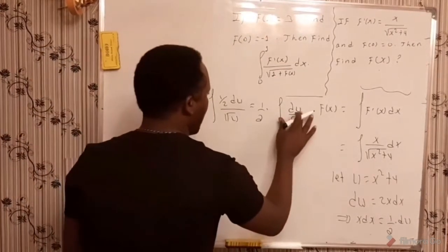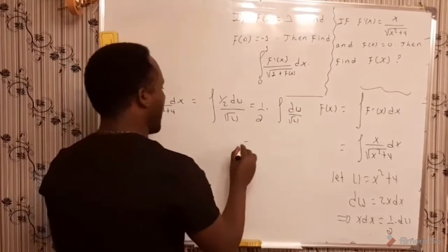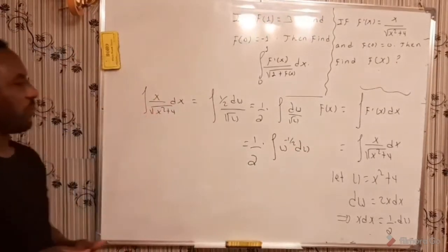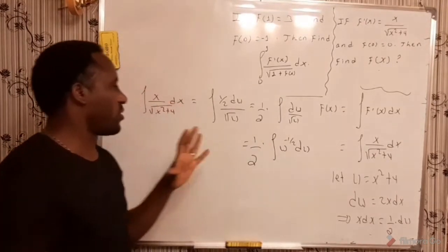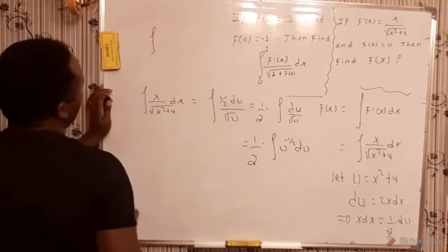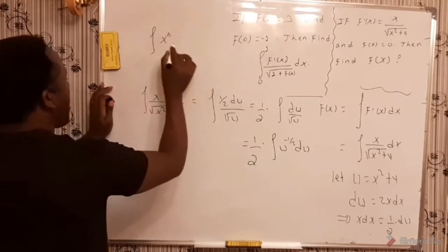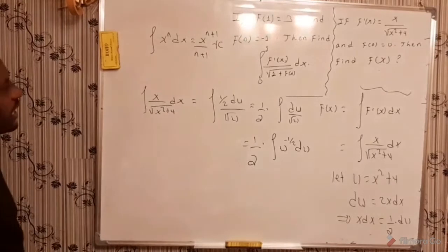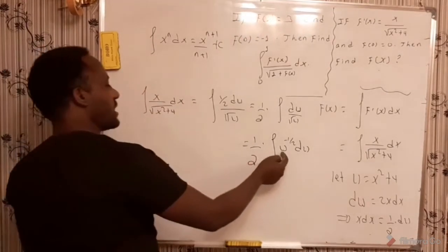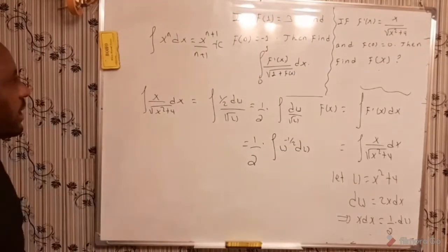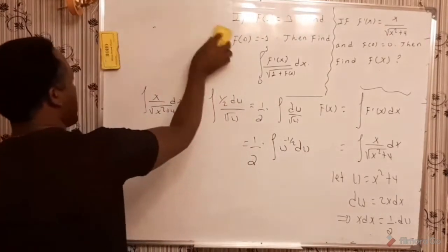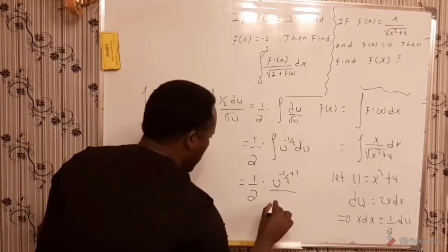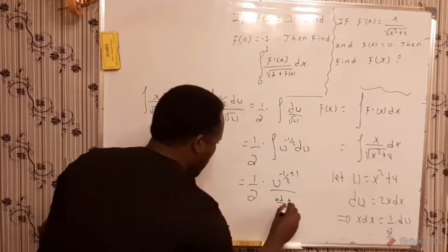This is also written as one over 2 times the integral of u raised to minus one half du. Based on the power rule for integration — which you can review in my previous video — the integral of x raised to n is x raised to n plus 1 over n plus 1 plus c. So this is immediately given by one over 2 times u raised to minus one half plus 1, over minus one half plus 1, plus c. This is an indefinite integral, so we add an arbitrary constant c.